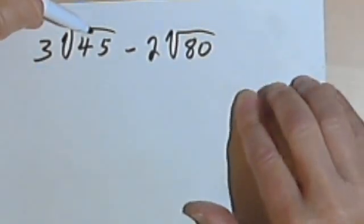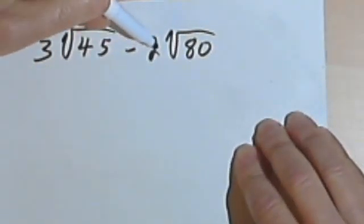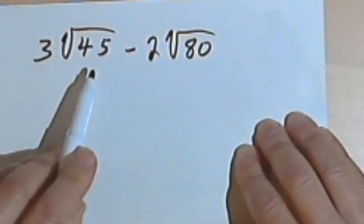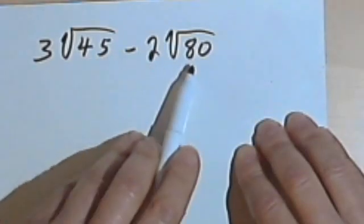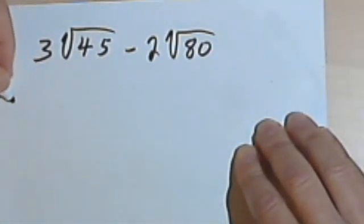Okay, we have 3 times the square root of 45 minus 2 times the square root of 80. And once again, the radicands are different. So I've got to see if I can simplify each one of these. So let's go.